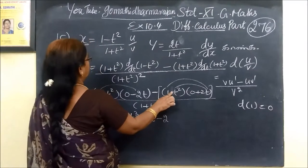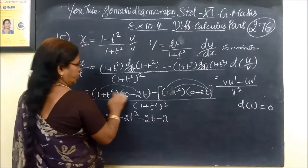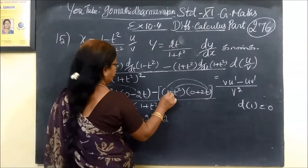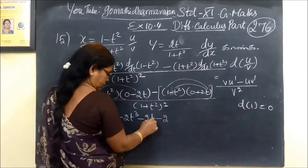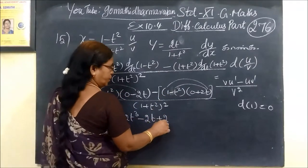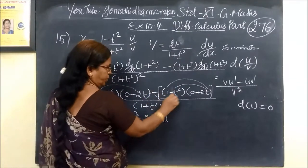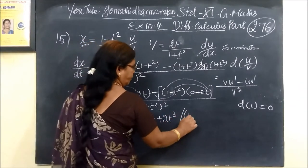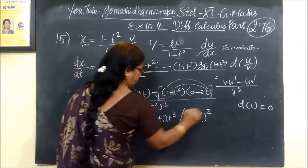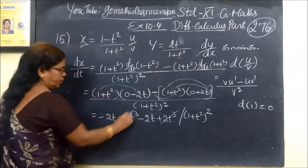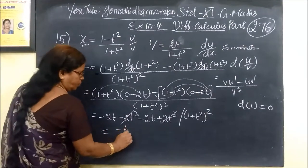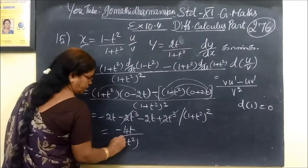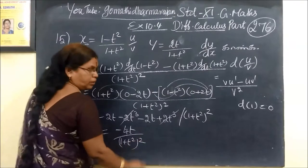So the difference will be minus. Now the difference is minus: 2 minus is 2 minus. So plus 2t² by 1 plus t squared the whole square — two terms are combined. So minus 4t by 1 plus t squared the whole square.